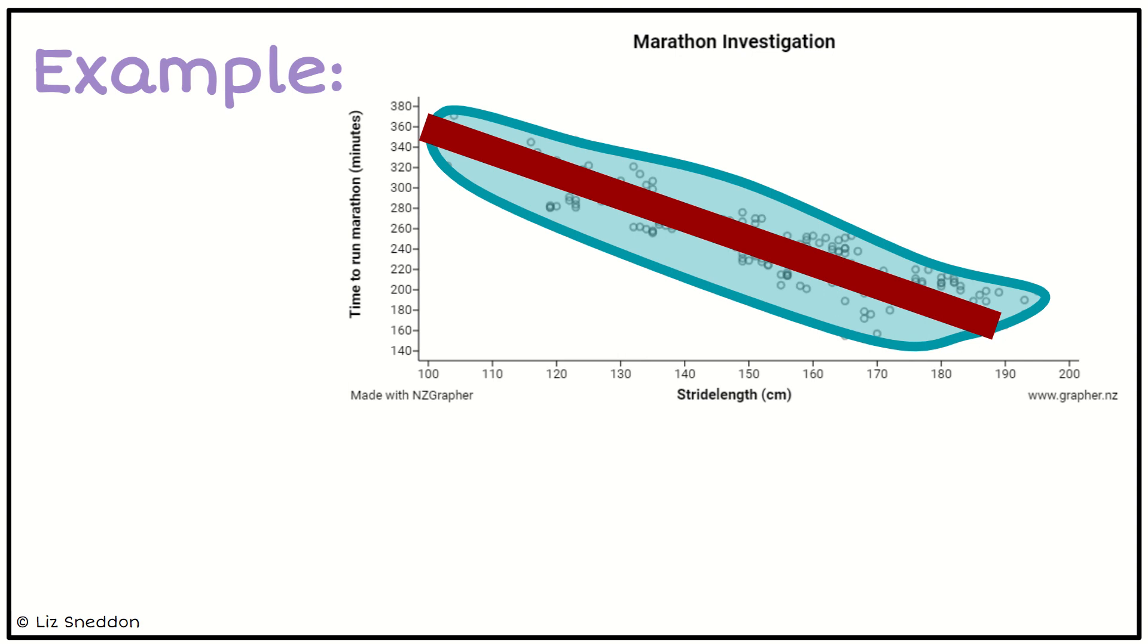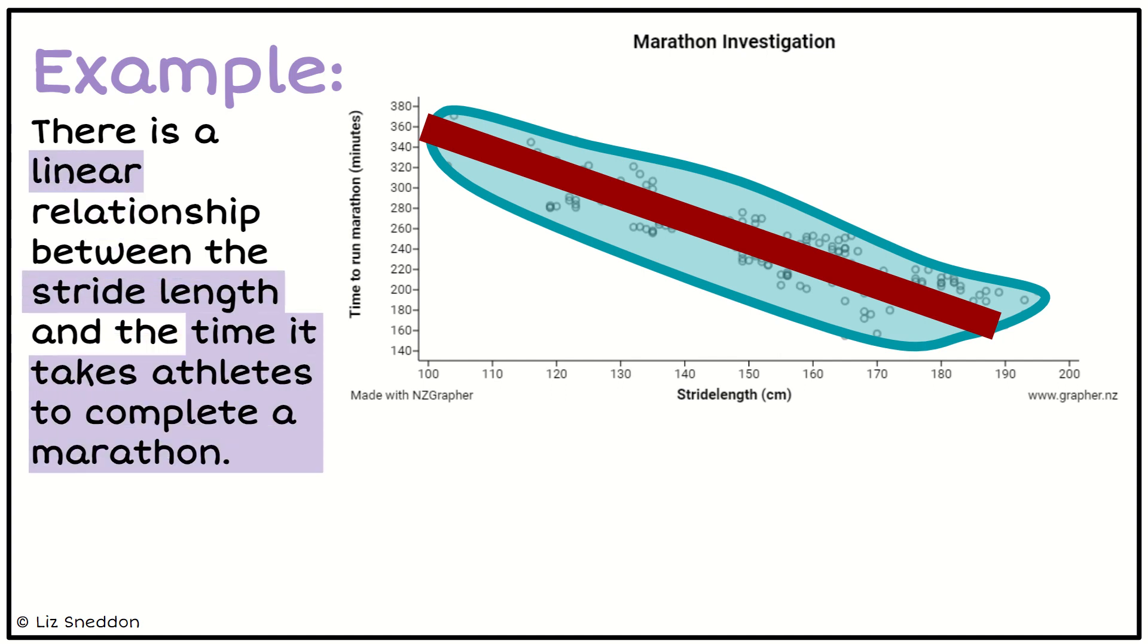So this one, a straight line does look good. So now I can say, right, this is a linear trend. And so I can say you've got a linear relationship between the stride length and the time it takes athletes to complete the marathon. So I've identified that it's linear and then I've identified both of the numeric variables.